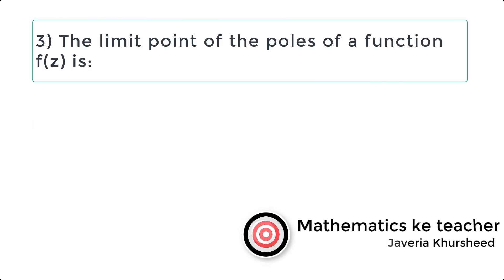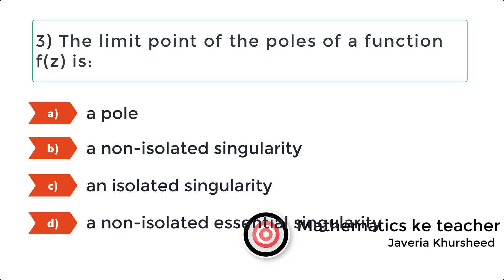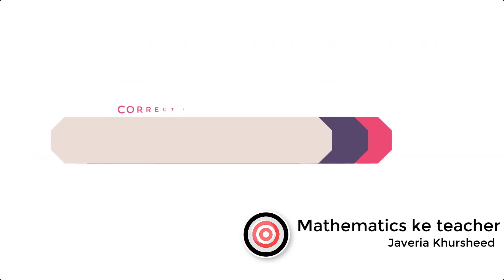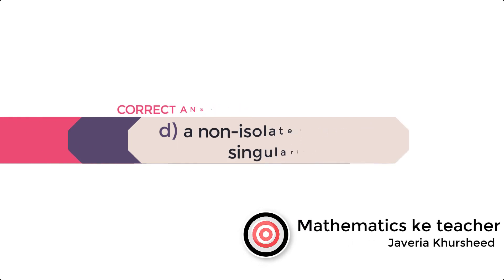Question 3: The limit point of the poles of a function f(z) is: A) A pole, B) A non-isolated singularity, C) An isolated singularity, D) A non-isolated essential singularity. Correct answer is D) A non-isolated essential singularity.